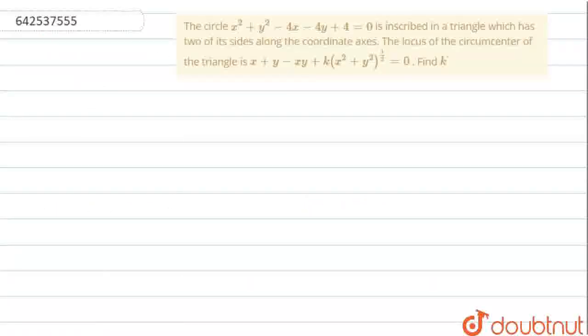Hello students, the question given here is: The circle x squared plus y squared minus 4x minus 4y plus 4 equals 0 is inscribed in a triangle which has two of its sides along the coordinate axes. The locus of the circumcentre of the triangle is x plus y minus xy plus k times (x squared plus y squared)^(1/2) equals 0. Find k.